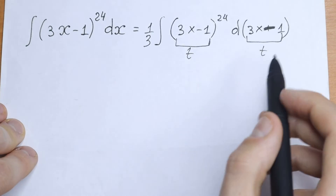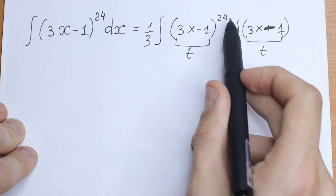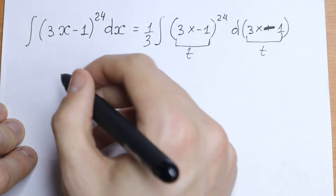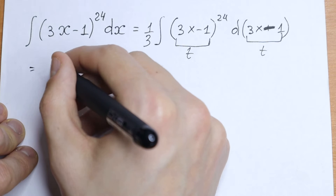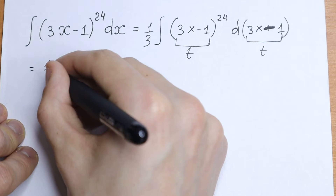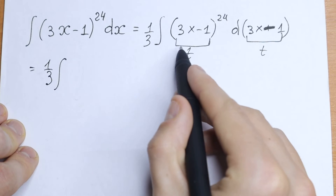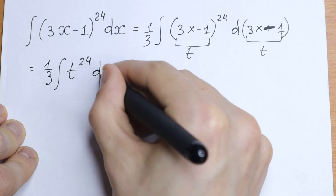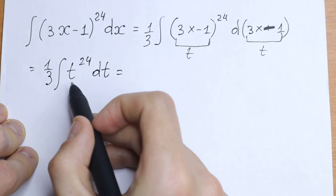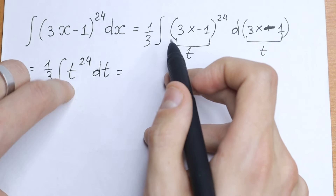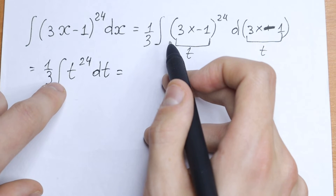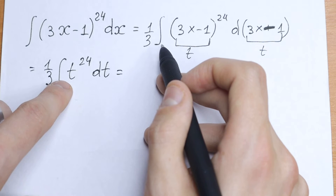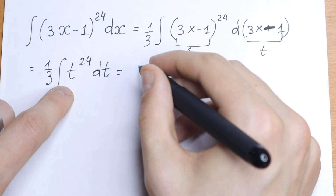We will have an interesting case. We will have t to the 24th power dt and one-third in the beginning. So as a result we will have one-third times the integral of t to the 24th power dt. And this is our classic case — this is like x squared. We will have integral x cubed over 3, but instead of x we have t, so we will have our table case.